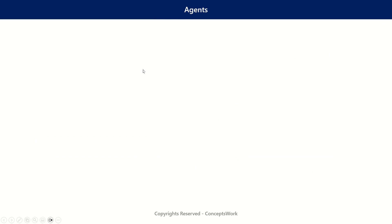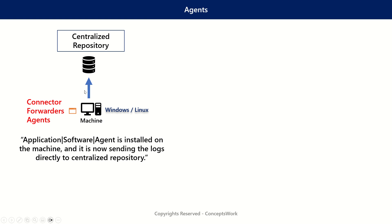If I talk about the first one, which is agents, imagine there is a machine from which you want to capture logs. This could be either Windows, Linux, or any other OS. In this case, you will install an agent on this particular machine and this agent will capture data and forward it to the centralized repository of your SIEM solution. This agent type is generally termed as connectors, forwarders, or agents.